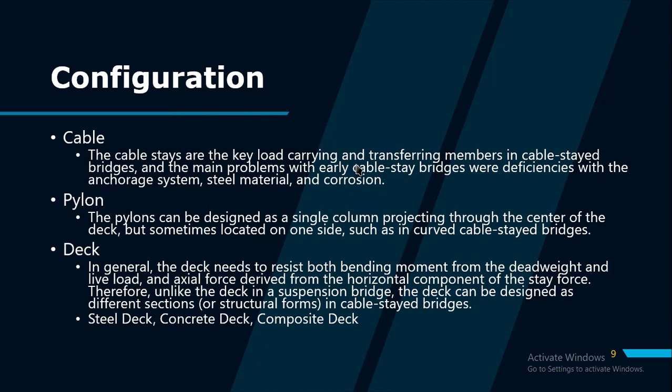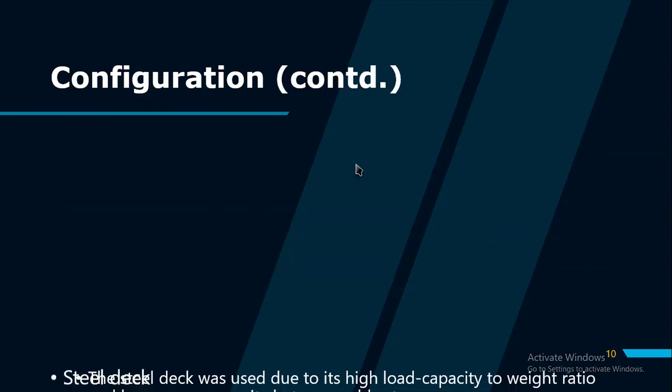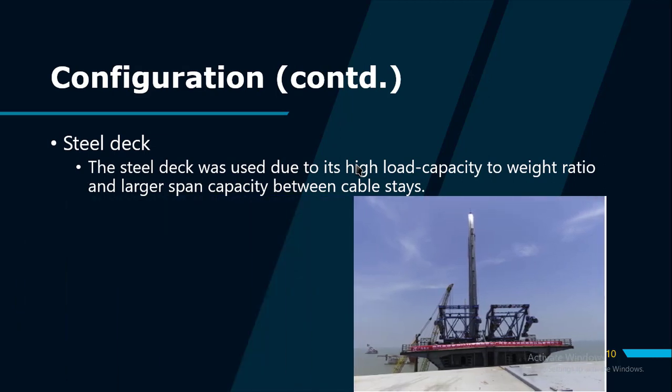In general, the deck needs to resist both bending moment from dead weight and live load, and the axial force derived from the horizontal component of the stay force. Unlike the deck in a suspension bridge, the deck in a cable-stayed bridge can be designed as different sections or structural forms. There are three types of decks. The steel deck was used in early cable-stayed bridges due to its high load capacity-to-weight ratio and larger span capacity between cable stays, with reduced deck weight resulting in an economical design for large span bridges.